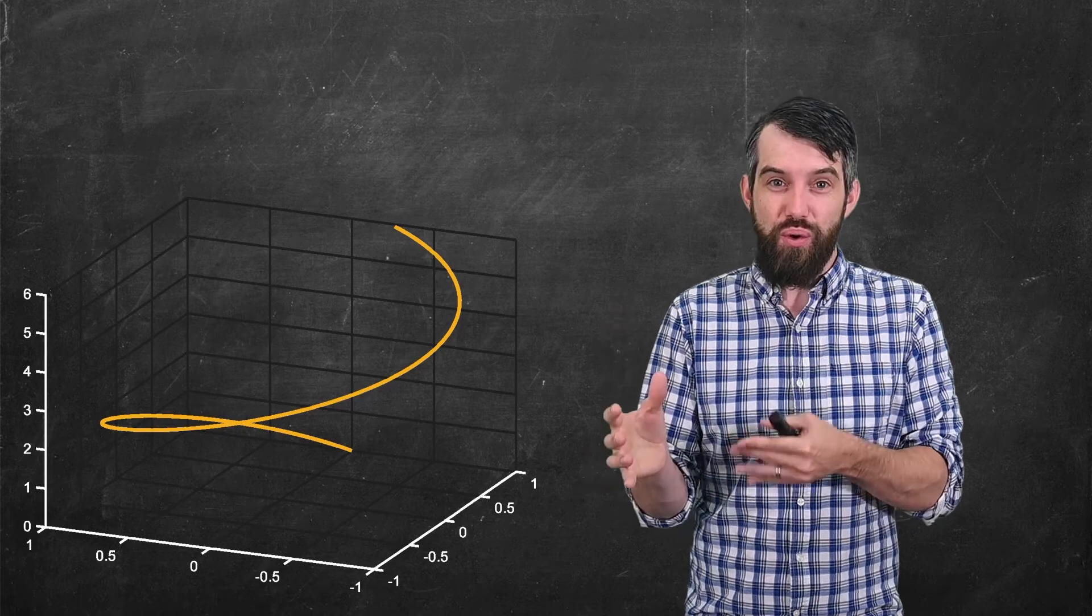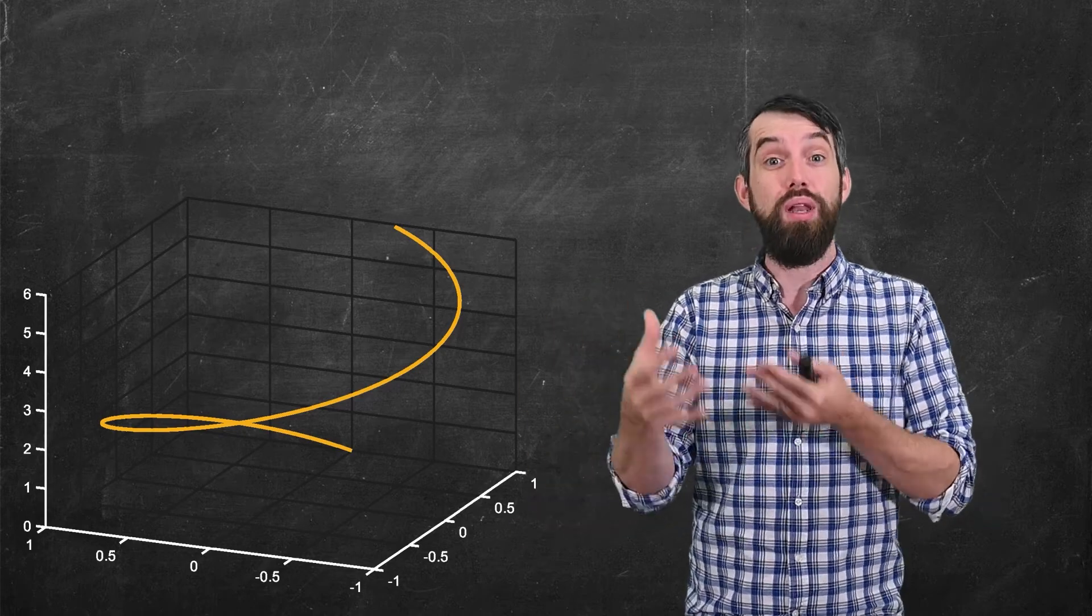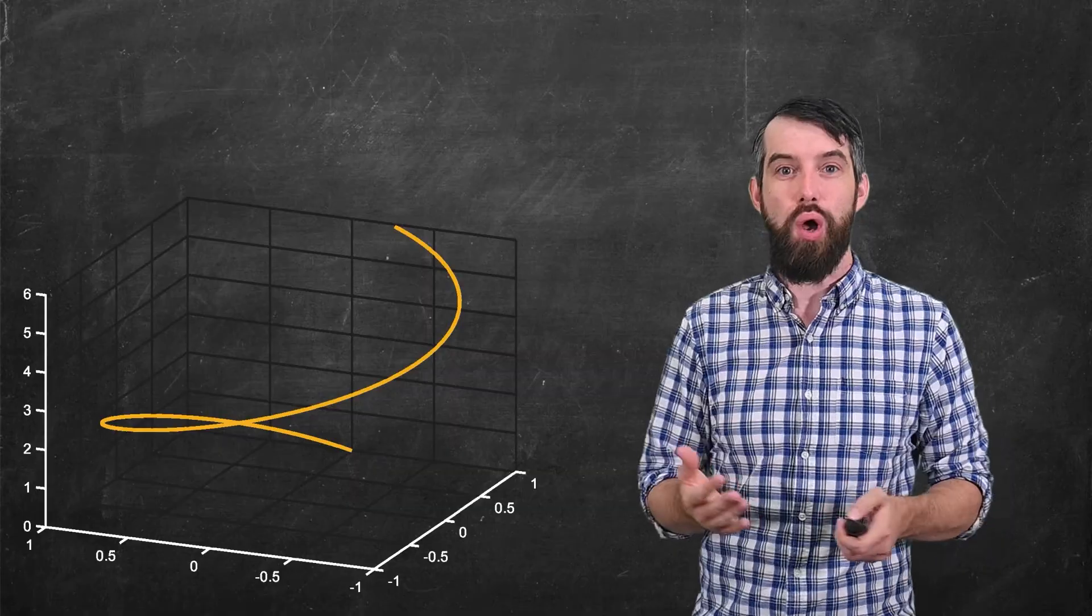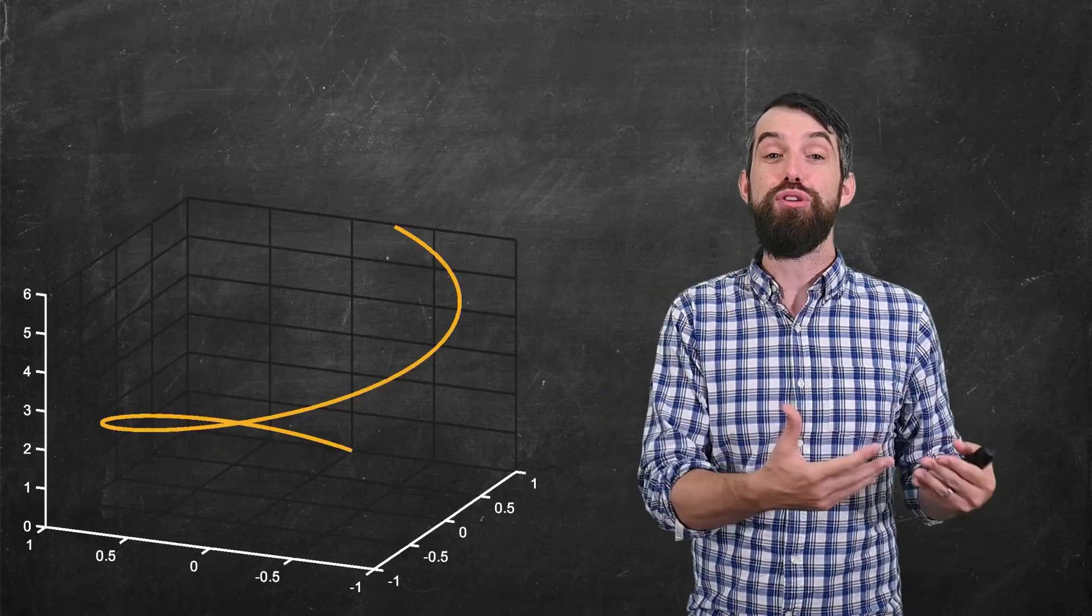We're going to see that this has some consequences in terms of how we interpret what a line integral is. So first of all, let me try to describe this r(t) by a parameterization.